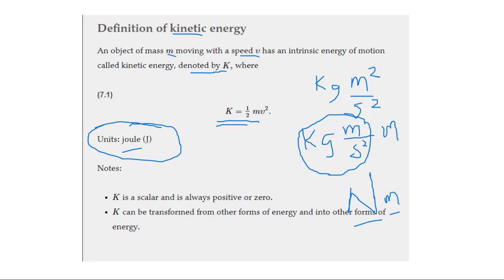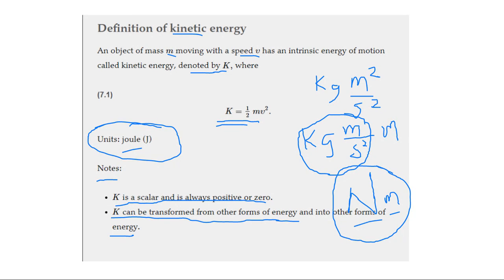If we get to talking about work, we'll see that work is also a Newton meter — meaning the ability to do work is energy. K is a scalar. Sydney asks what a scalar is: it's a number, not a vector.